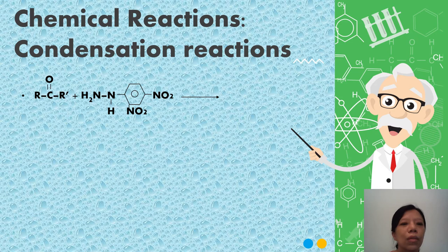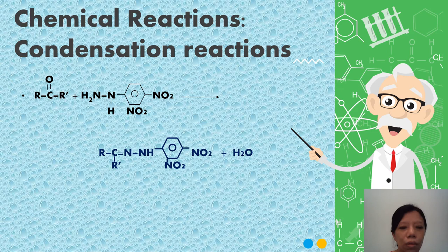This is the equation. We remove the oxygen from carbonyl compounds and remove two hydrogen atoms from the reagent 2,4-dinitrophenylhydrazine. So water comes out, then the carbon joins up. The carbon atom forms a bond with the nitrogen, and you will get this 2,4-dinitrophenylhydrazone, which is an orange precipitate.